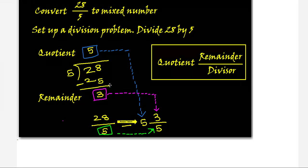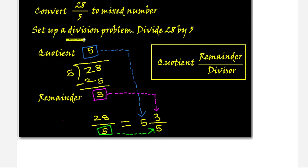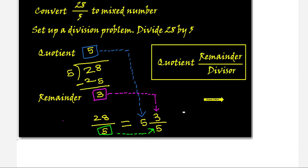Now it's easy to write the mixed number. The quotient becomes the whole number — quotient is 5, so write 5. The remainder goes to the top as the numerator — remainder is 3, so 3 on top. The denominator stays the same as the divisor — 5 on the bottom. The form is: quotient, then remainder over divisor. This is the step-by-step method to convert an improper fraction to a mixed number.